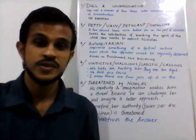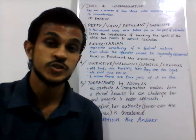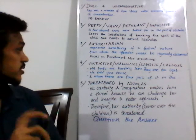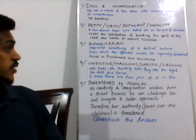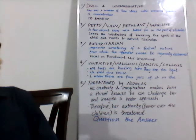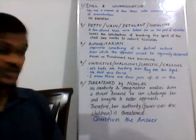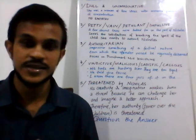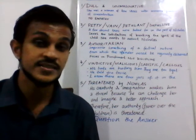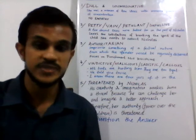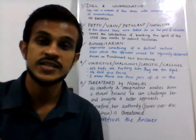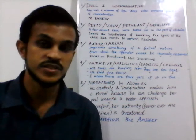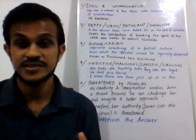When we look at the punishment methods she uses, the text says she 'improvises something of a festival nature from which the offender would be rigorously debarred.' Rather than explaining to the children what their mistake is and why they need to work on it, she is focused on punishing them and making them feel less about themselves — making them feel guilty and ashamed.